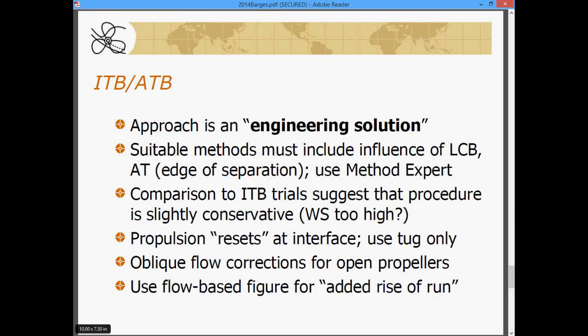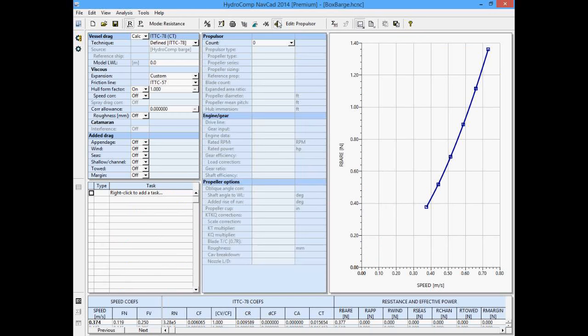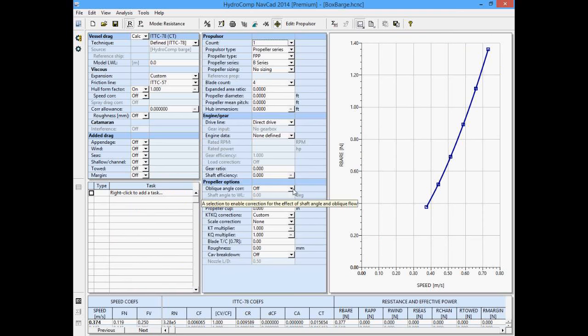Let me switch back to NavCAD here and show that to you. Come back to this in a moment. It would be, this is just a resistance, I don't have this here. But down here in this oblique angle correction on your propulsor data entry, you will turn this on. Set your shaft angle to be whatever the shaft angle is for the tug. And then your added rise of run will be a fairly substantial figure. It could be as high as 30 degrees.